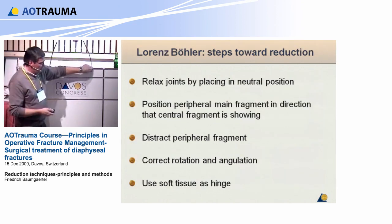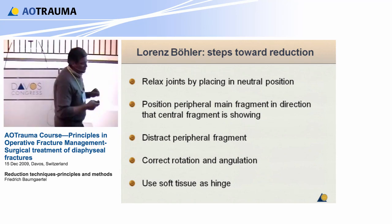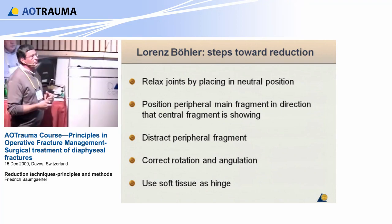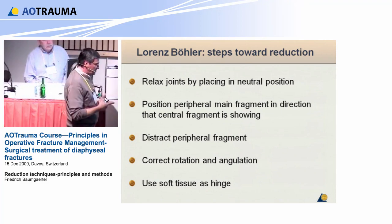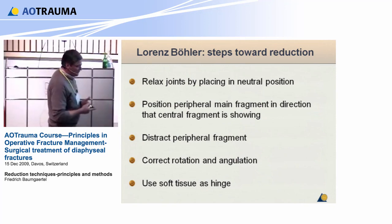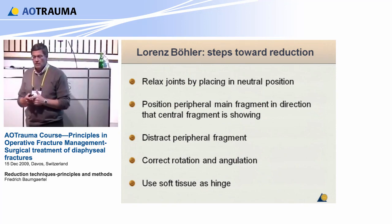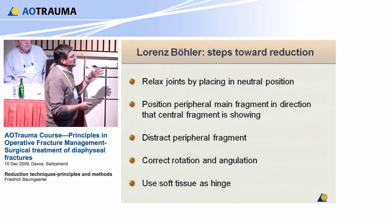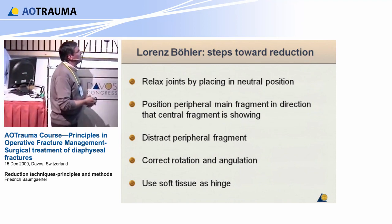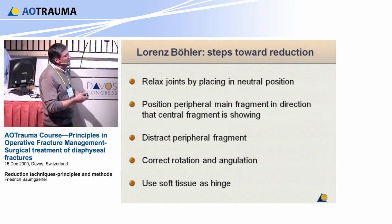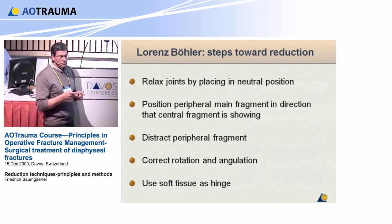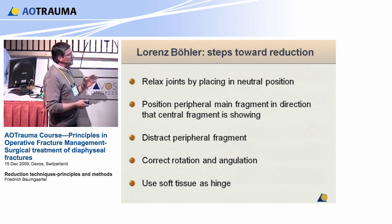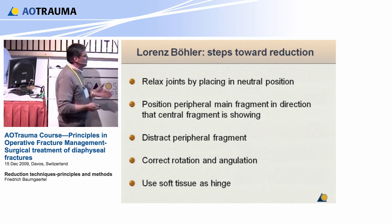Lorenz Böhler was probably the father of conservative fracture treatment during the middle of the last century. He reduced fractures and put them into plaster and splints, and was very successful even in metaphyseal and joint fractures. His principles: relax the joints by placing them in neutral position; position the peripheral main fragment — the distal main fragment — into the direction the central fragment is pointing; distract the peripheral fragment; correct rotation and angulation; and use the soft tissue as a hinge.